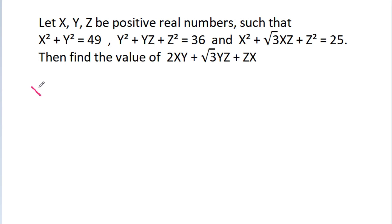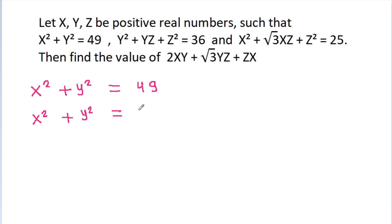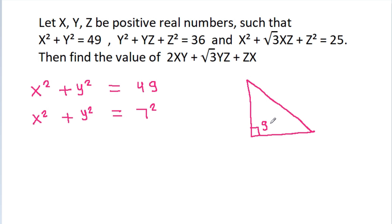We have x² + y² = 49, which is 7². That means if we draw a right-angle triangle where this angle is 90°, and this side is x and this side is y, then this side will be 7.